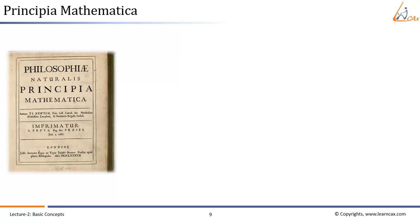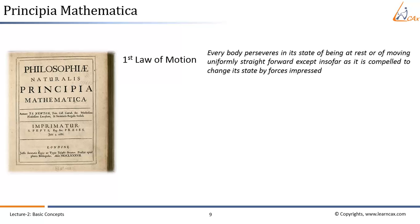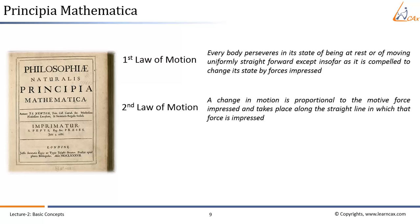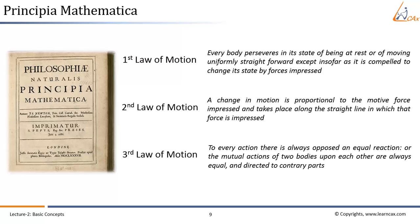Here it goes. The first law of motion states that, every body preserves in its state of being at rest or of moving uniformly straight forward, except insofar as it is compelled to change its state by forces impressed. The second law says, a change in motion is proportional to the motive force impressed and takes place along the straight line in which that force is impressed. And the third law says, to every action there is always supposed an equal reaction or the mutual actions of two bodies upon each other are always equal and directed to the contrary parts.